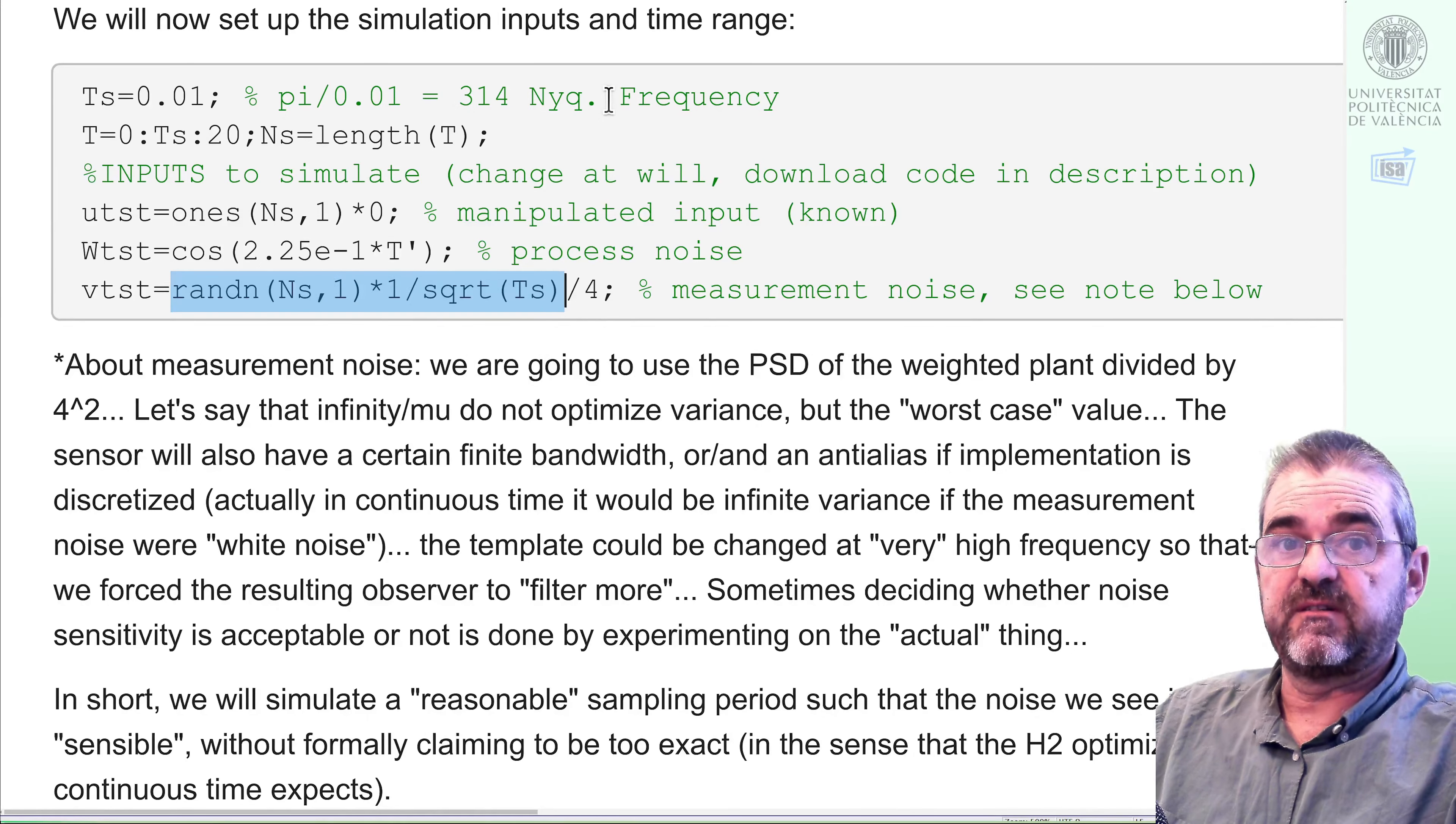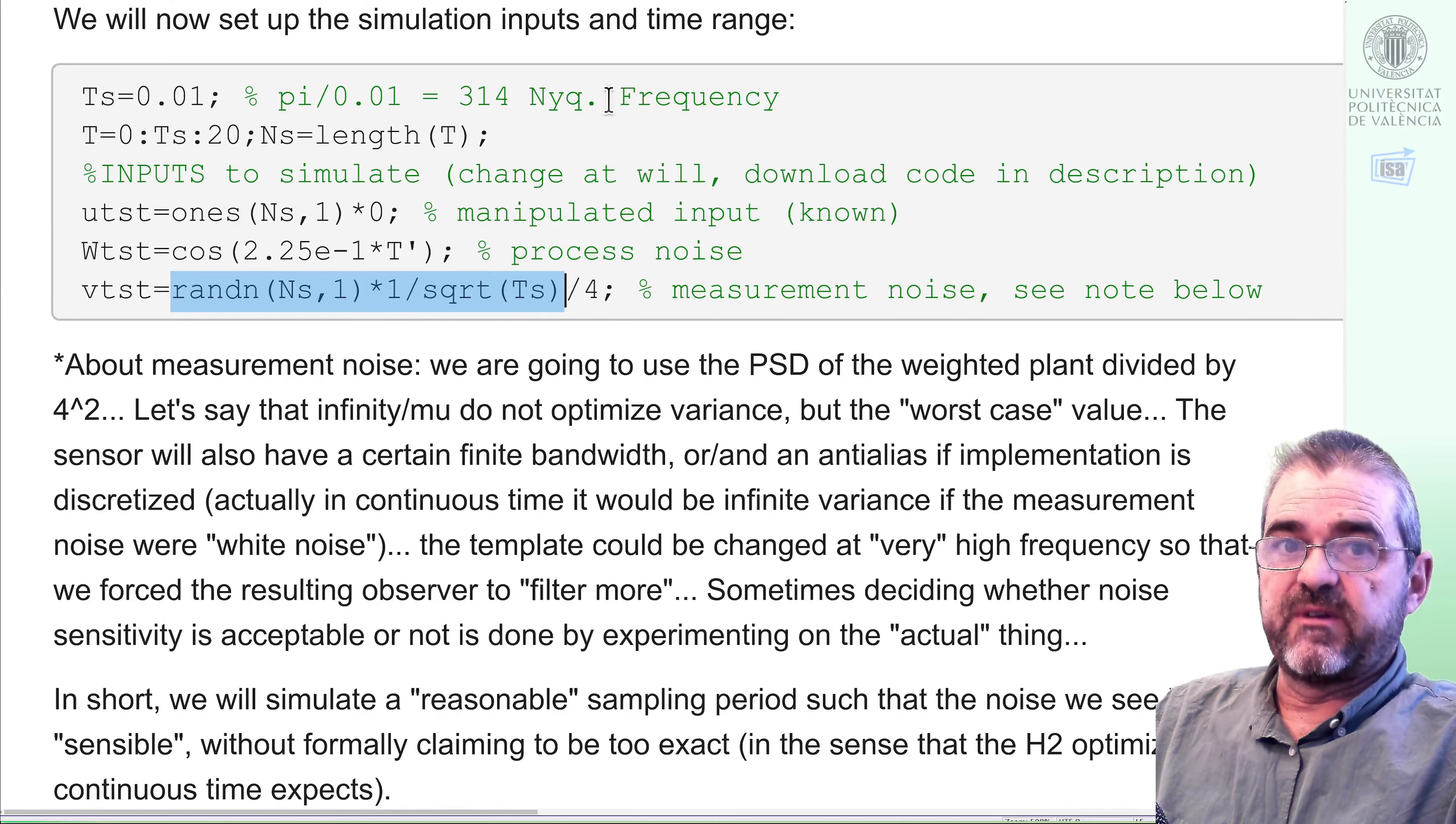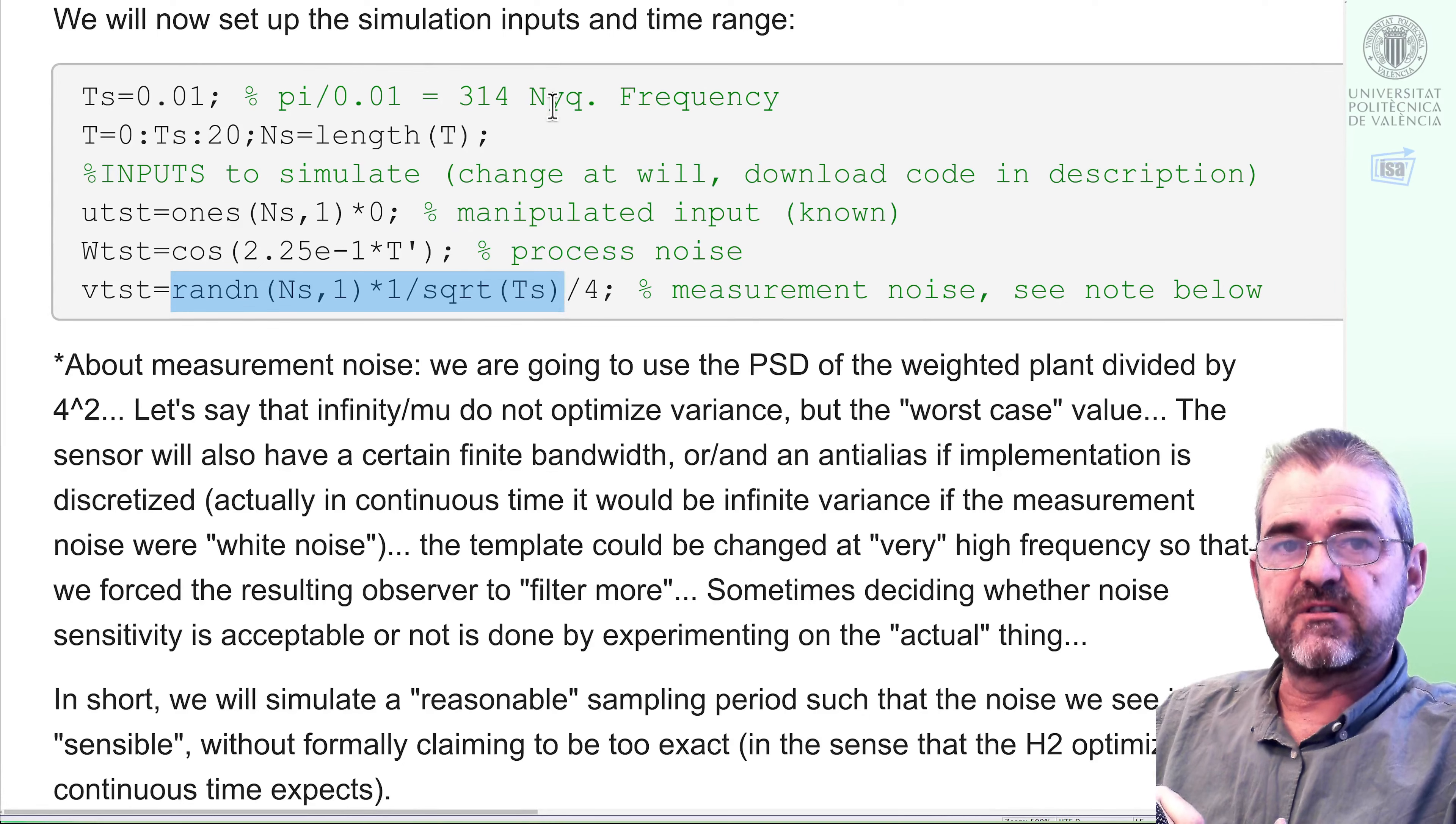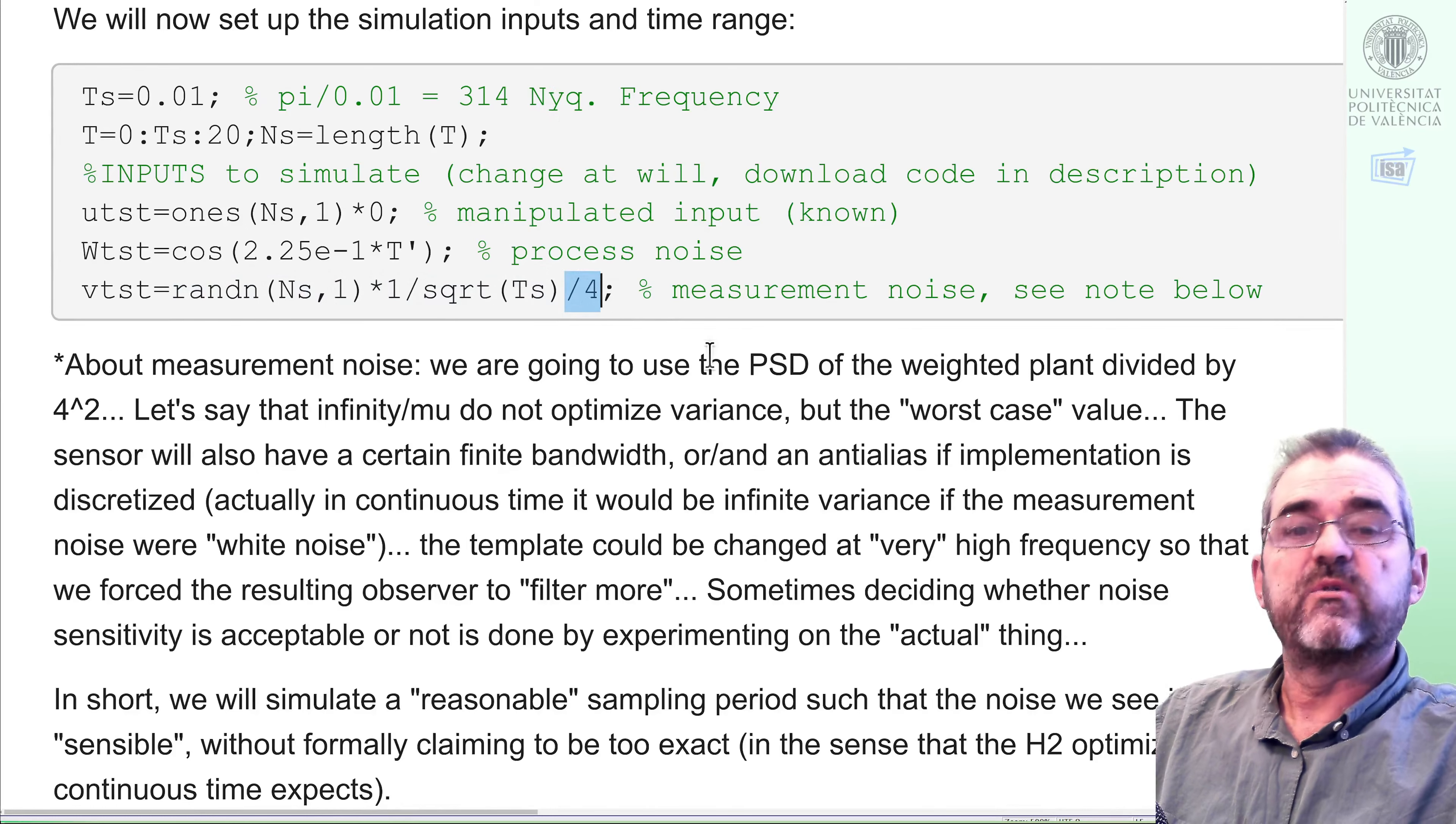But here we have two things. One, we will assume that actual signals will be somehow band limited in my experimental stuff, and I will have negligible frequency content from 300 radians onwards. So I don't believe that I will face a true white noise in my experiments. This is why I chose the sampling rate 0.01. And then also, H infinity designs do not consider process noise to be a white noise. They are not minimizing variance. They are minimizing sort of worst case amplitude.